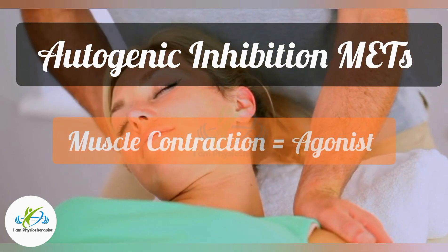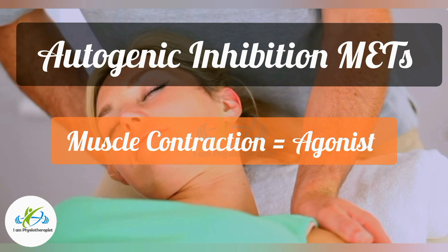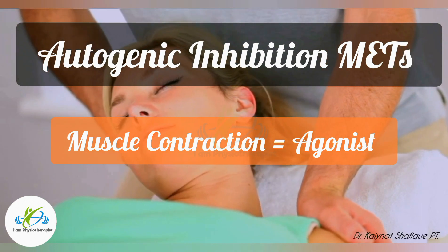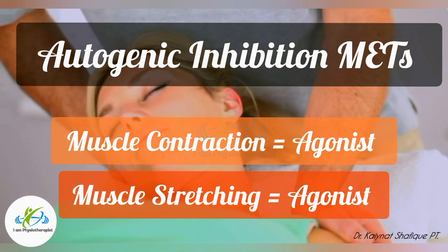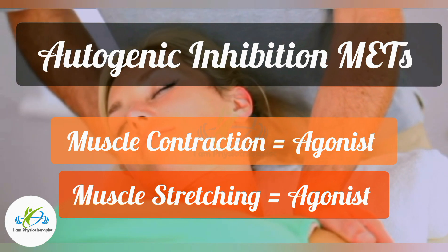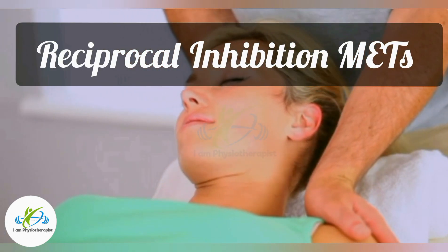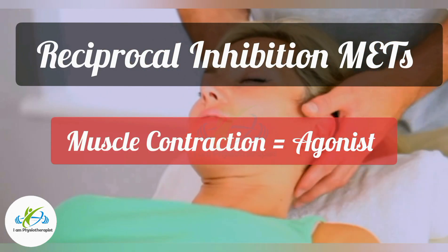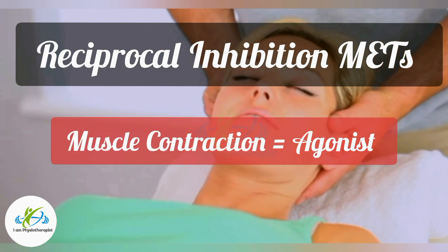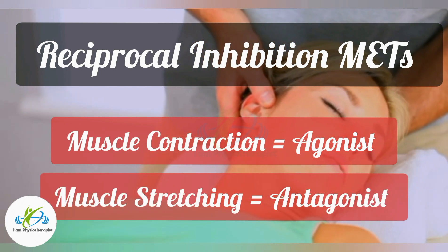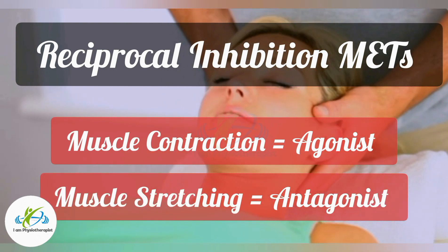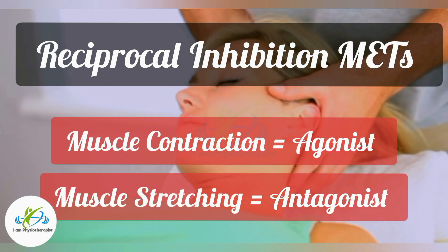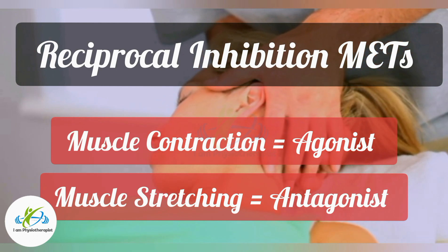If a submaximal contraction of the muscle is followed by stretching of the same muscle, it is known as autogenic inhibition METs. And if a submaximal contraction of a muscle is followed by stretching of the opposite muscle, then this is known as reciprocal inhibition METs.